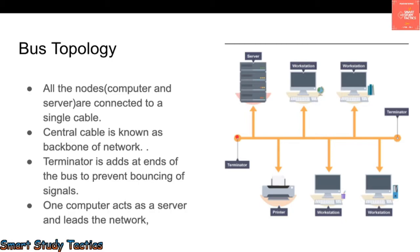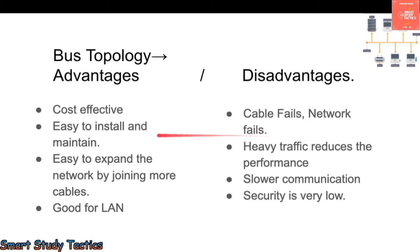At both endpoints you can see terminators, which prevent the signal from bouncing back. There is one computer known as the server which leads the bus and is responsible for all the things. Now, the advantages of bus topology: it is cost effective — everyone can establish a LAN at home — and it is easy to install, maintain, and expand the network by joining more cables. It is best suited for LAN.